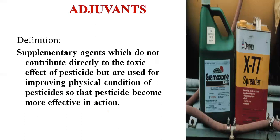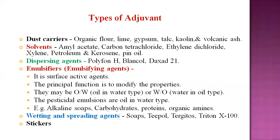Adjuvants are supplementary agents used in pesticides during application. The definition is important: supplementary agents which do not contribute directly to toxicity — adjuvants are not toxic substances — but are used for improving the physical condition of the pesticide so that it becomes more effective in action. These are called adjuvants.